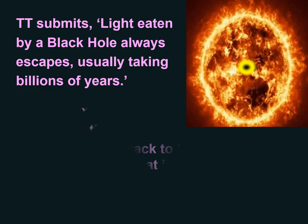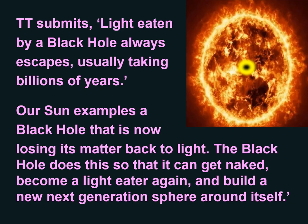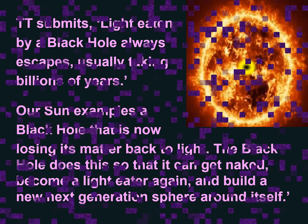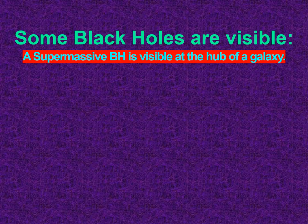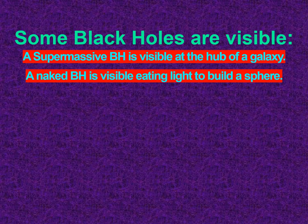Follow the process: a naked black hole eats till full, cloaks inside the sphere it built, but after billions of years that cloaked black hole weakens, losing its matter which escapes back to light. Volcanoes, suns, and supernovas example this process — a supernova's black hole uncloaks to build a new sphere. Trillion Theory submits that light eaten by a black hole always escapes. Our sun is an example of a black hole now losing its matter back to light, so that it can get naked, become a light eater again, and build a new next-generation sphere.